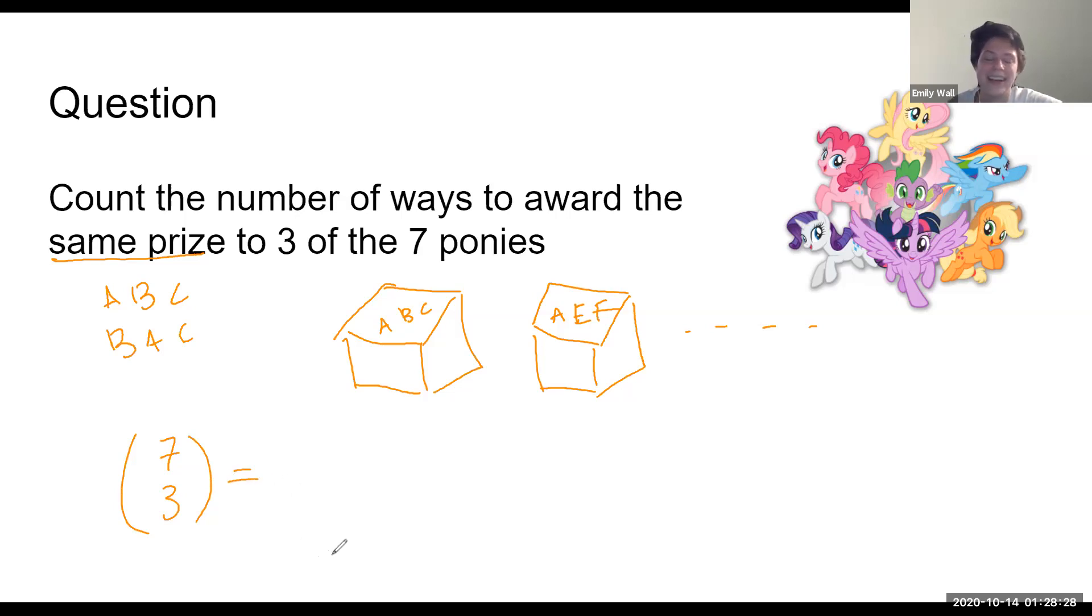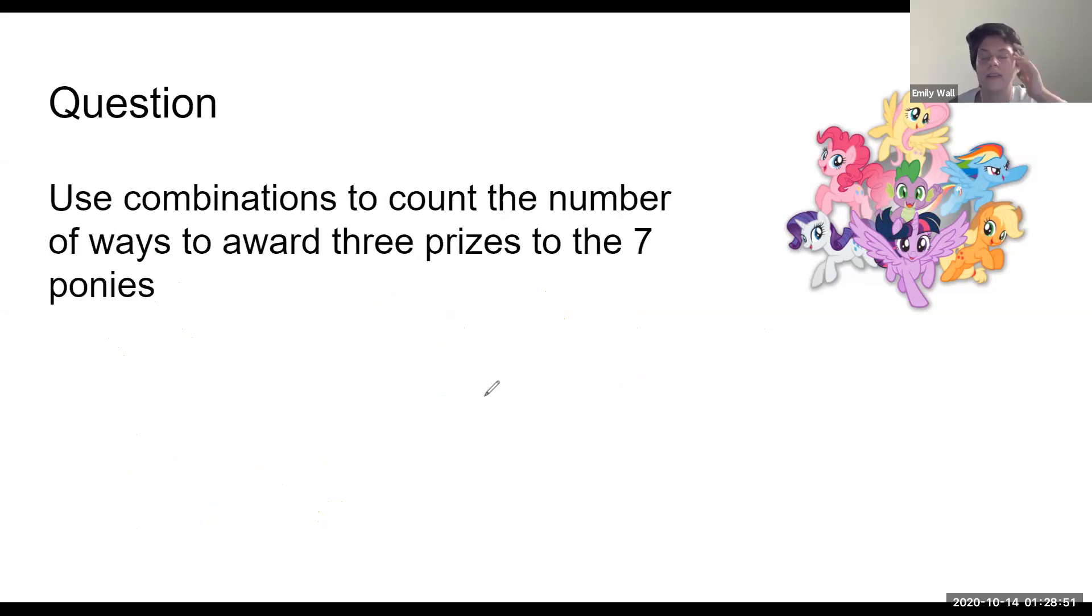Seven choose three - now the formula for this is seven factorial over three factorial times four factorial. And let's say I now tell you we're going to count the same thing we did before, where we cared about first, second, third place prize, but you have to use a combination to do it. Where could we start with that? A combination, but we care about order.